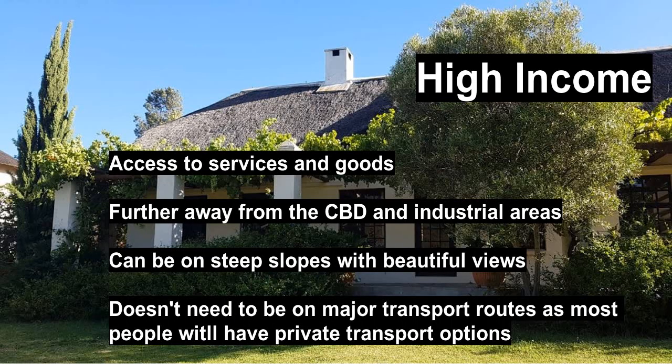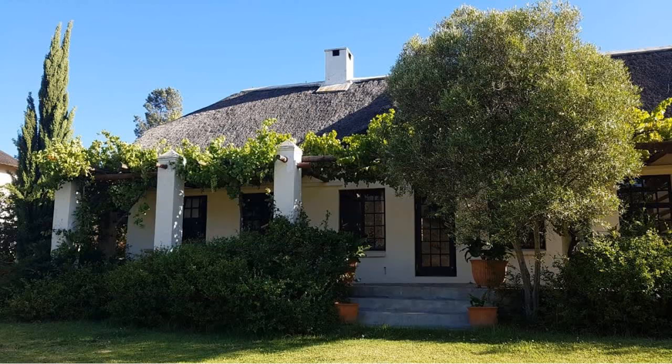High income areas have access to services and goods. They're far away from the city's industrial areas because wealthy people don't want to be near things that smell or look bad. They'll often be on a steep slope with beautiful views, and they don't need to be on a major transport route because most residents will have their own private transport — cars, motorbikes, scooters, that kind of thing.